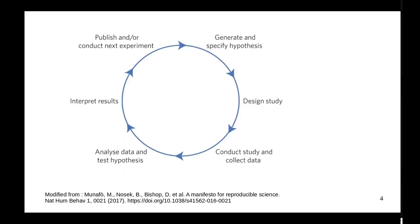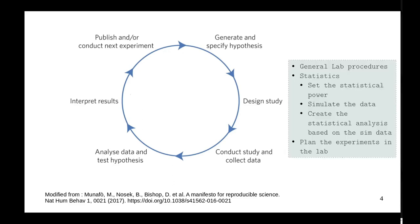In general, the cycle of research goes like this: you generate a specific hypothesis, design the study, conduct the study and collect the data, do the analysis, interpret the results, and publish — or conduct the next experiment and start from the beginning. When we talk about designing the study, we mean setting the statistical power, simulating the data, creating the statistical analysis based on the simulated data, and planning the experiments in the lab.